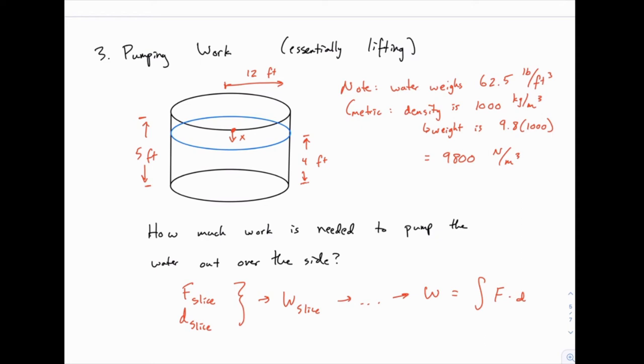So we're starting at the top of the tank and measuring downward with x. So wherever we take a slice, the location will be x. It will be x feet below the top rim of this tank. At the top of the water, for instance, x would be 1. At the bottom of the tank, x would be 5, and so on. So the distance, we'll figure out when we need to.